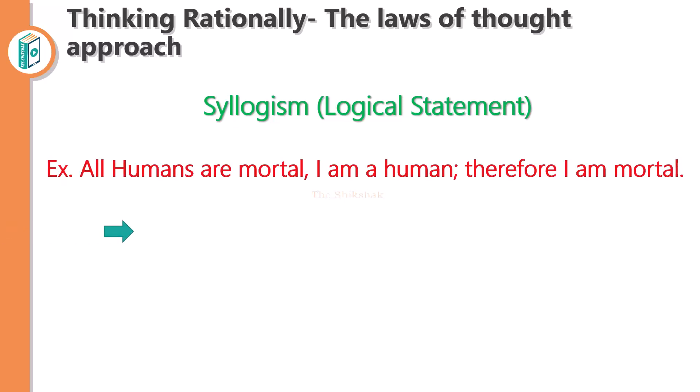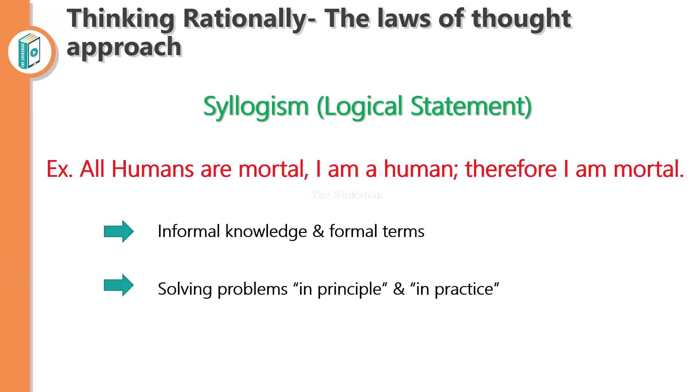This law of thought approach has two main obstacles. The first is informal knowledge versus formal terms — it is not easy to take informal knowledge and state it in the formal terms required by logical notation. Not every sentence can be built up in logical notation, and the knowledge may be less than 100% certain. The second obstacle is the difference between solving a problem in principle and solving it in practice — it may be described well on paper, but is very difficult practically.